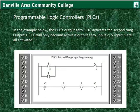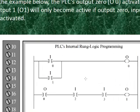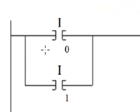In the example below, the PLC's output 0 activates the second rung. Output 1 will only become active if output 0, input 2, and input 3 are all activated. If either input 0 or input 1 becomes true, then output 0 becomes true. This is internal to the PLC.